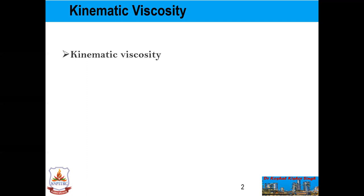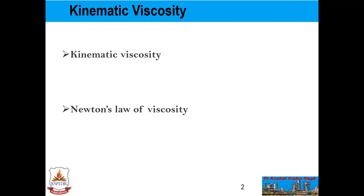Now we will see Newton's law of viscosity. It states that the shear stress tau on a fluid element layer is directly proportional to the rate of shear strain. The constant of proportionality is called the coefficient of viscosity. Mathematically it is expressed as tau is equal to mu times du/dy, where mu is the proportionality constant known as viscosity. Fluids which obey this relation are known as Newtonian fluids, and fluids which do not obey it are called non-Newtonian fluids.